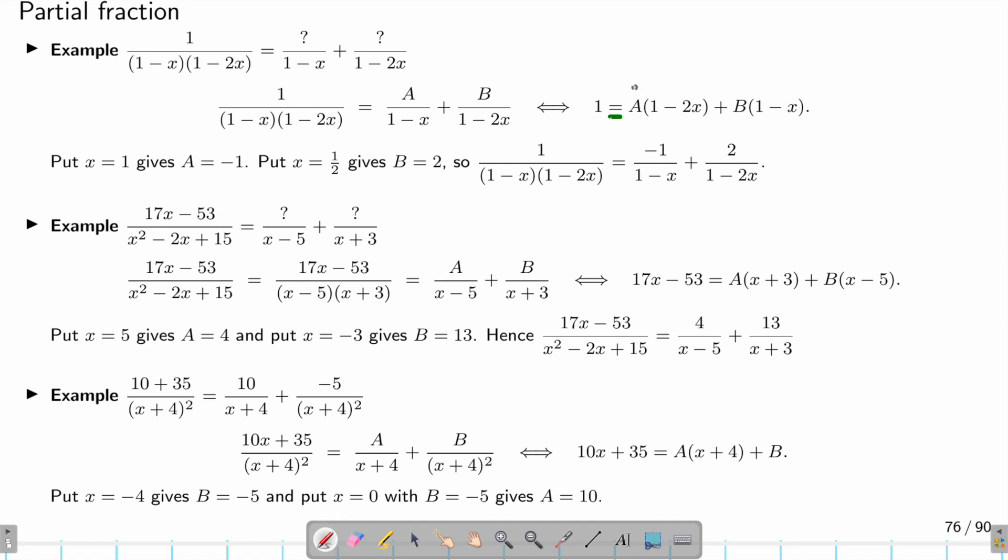Once I know A is negative 1, I put x as 1/2. This term will disappear and give me B. If I put x = 1/2, this term is 0, so I have 1 - 1/2, which gives 1/2. That means B/2 = 1, so B = 2. That's how you do it.